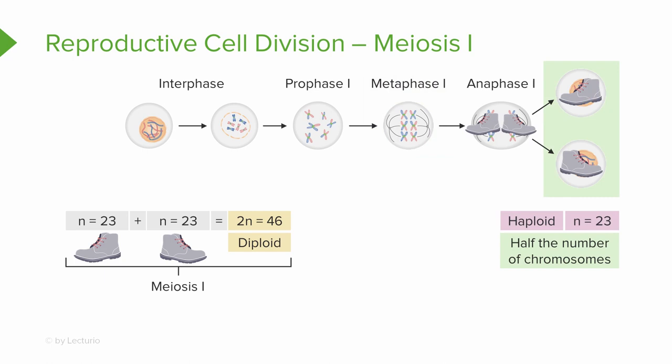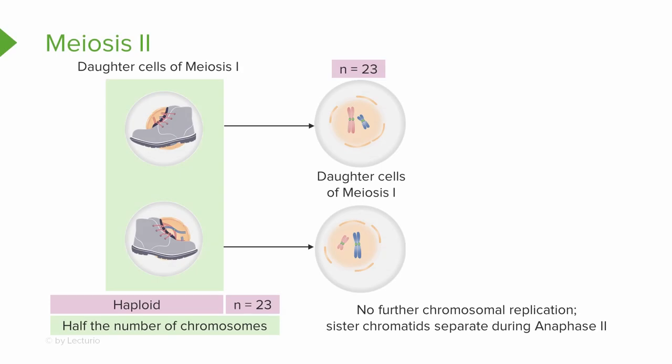After anaphase and telophase I, we have separated the pairs from each other into separate cells. This is like separating the left shoes from the right shoes of each pair and putting them into separate closets. Because we now only have half of the pair, the cell is now haploid, but the chromosomes are still in the sister chromatid or duplicated form.